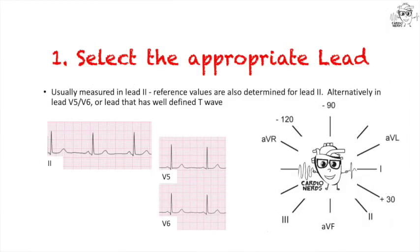Step number one is to identify the lead where you want to measure your QT interval. Lead II or V5, V6 are usually the best options for measurement. The vector axis of the P, QRS, and TU wave is predominantly directed inferolaterally and thus in the direction of Lead II. This often results in more clearly defined P, QRS, T, and U waves in Lead II, which promotes their measurement. In addition, reference values are also determined for Lead II. If you don't see a well-defined T-wave in these leads, select the lead where the T-wave is clearly visualized.